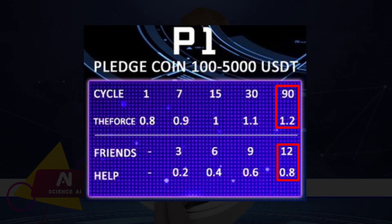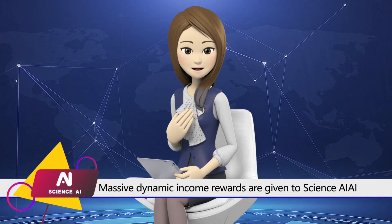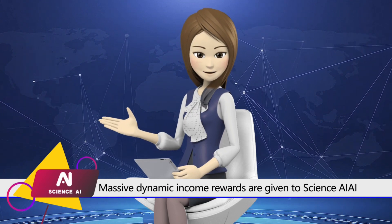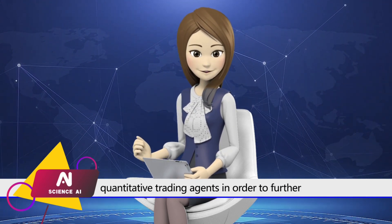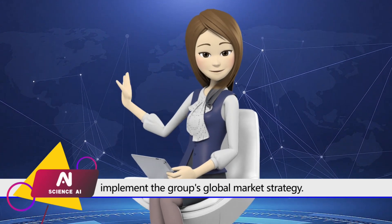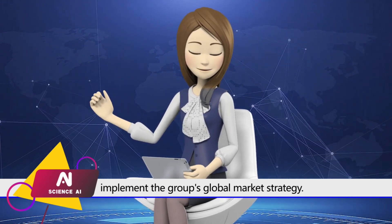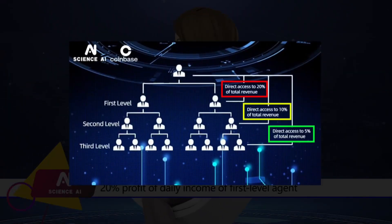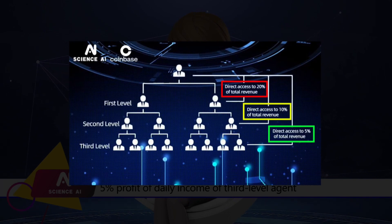For 90 days: on the basis of the original one-day pledge, the first income will increase by 0.4%. The boost value will increase to 0.8% if more than 12 people are invited. Massive dynamic income rewards are given to Science AI quantitative trading agents in order to further implement the global market strategy: 20% profit of daily income for 1st level agents, 10% for 2nd level agents, and 5% for 3rd level agents.